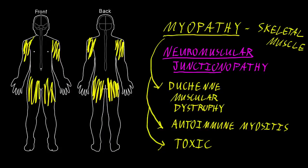Diffuse dysfunction of neuromuscular junctions can cause a pattern of weakness similar to myopathy affecting the large proximal limb muscles. But what is much more common is involvement of some of the muscles of the head, particularly the eyes. Muscles that move the eyes can become weak, and particularly the muscles of the eyelids that hold the eyelids up can become weak, causing droopy eyelids. When these conditions get severe, the rest of the muscles throughout the body are often affected as well.